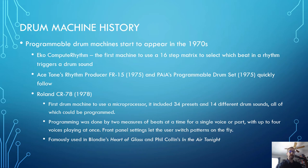The 16-step matrix is very important because it takes a measure of 4/4 time and divides it into 16th notes — very common in most styles of music. If you wanted less, you could dial it down to 12 steps in a 3/4 meter, but you couldn't go beyond 16 steps. This was quickly followed by Ace Tone, now Roland, with their Rhythm Producer FR-15 in 1975, and Pia's Programmable Drum Set, also from 1975. But leading into 1978, microprocessors had come down in price, and we were no longer dealing with vacuum tubes — we could store presets and use synthesis-based sounds.